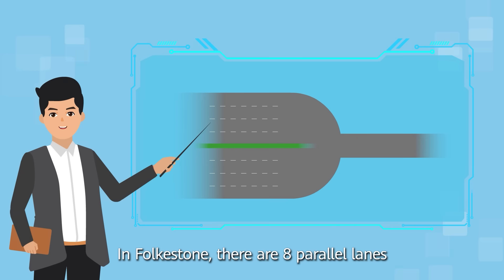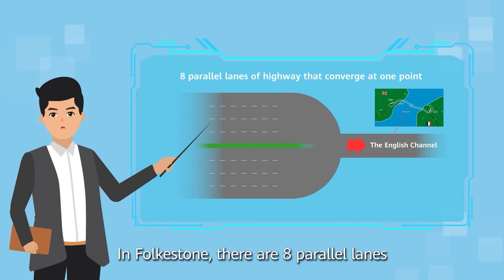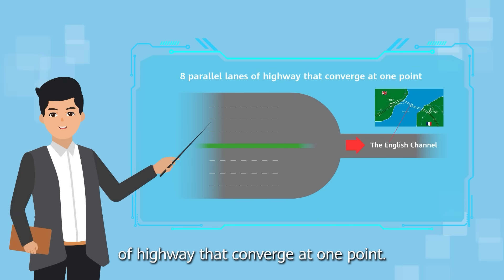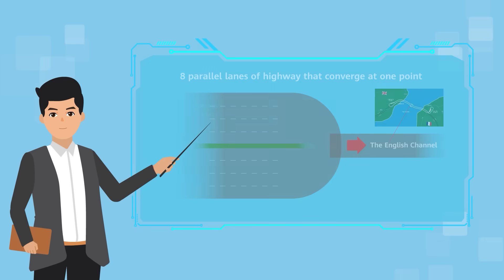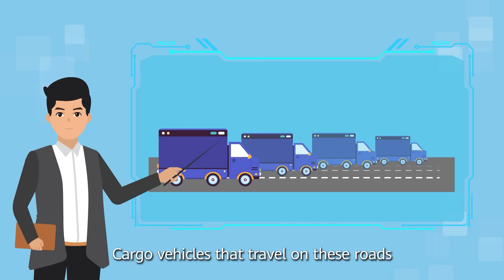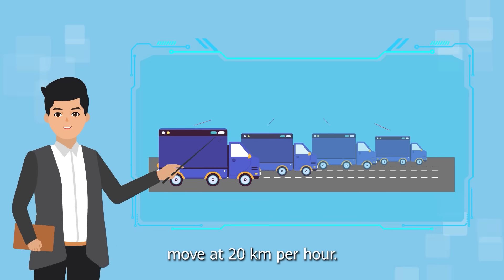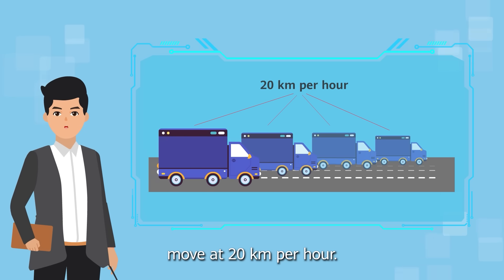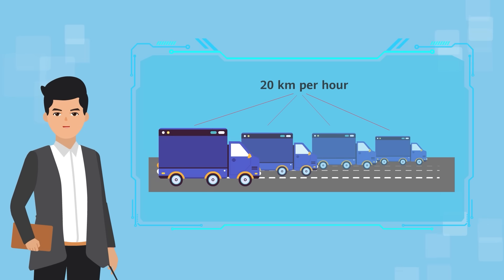In Folkestone, there are 8 parallel lanes or highways that converge at one point. Cargo vehicles that travel on these roads move at 20 km per hour.